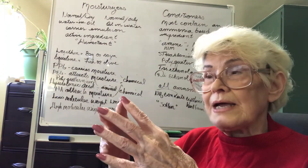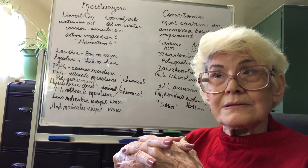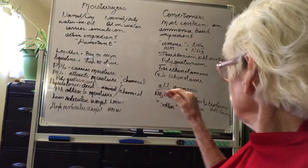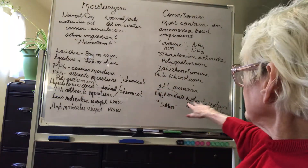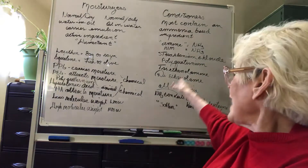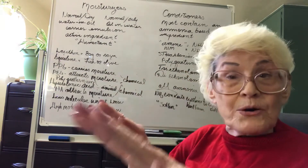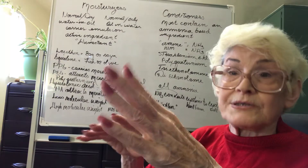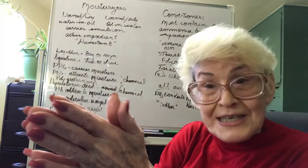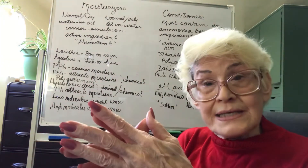The other types of conditioners are keratin-based — what are called protein reconstructors. When we're reconstructing the protein, that's what we want for chemically relaxed hair. It's going to have hydrolyzed keratin and hydrolyzed amino acids.